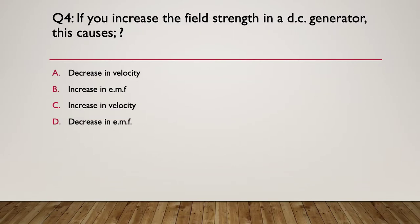Question four. If you increase the field strength in a DC generator, this will cause what to happen? A: decrease in velocity, B: increase in EMF, C: increase in velocity, or D: decrease in EMF. Pause here.